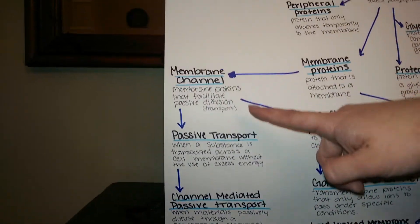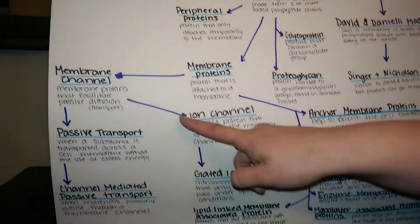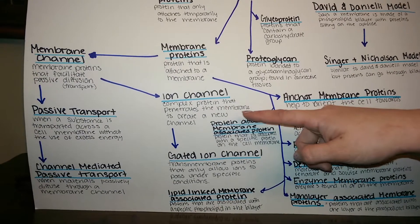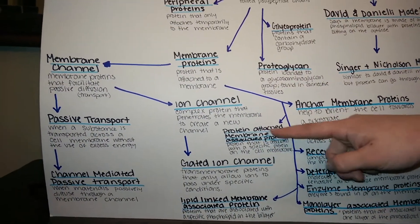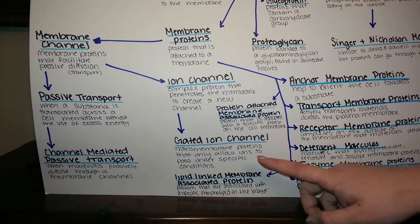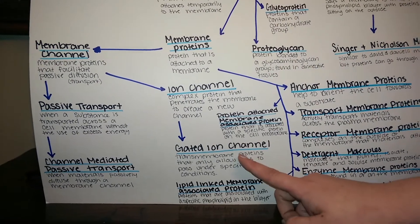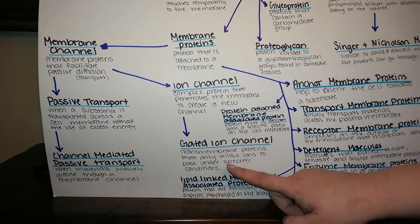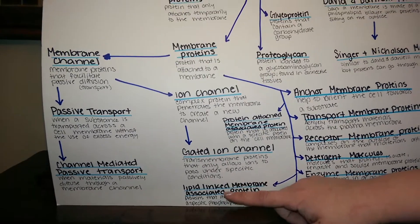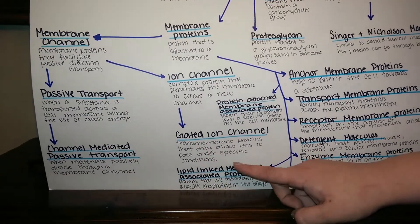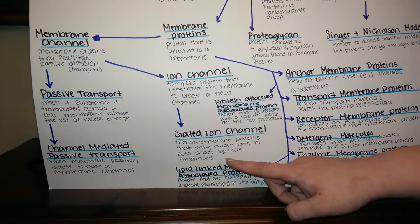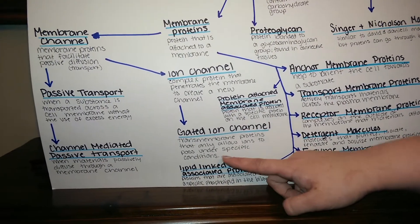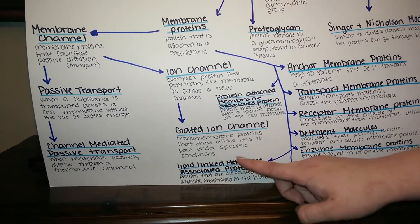Membrane channels also lead into ion channels, which are complex proteins that penetrate the membrane to create a new channel. This leads down to gated ion channels, which are transmembrane proteins that only allow ions to pass under specific conditions — so specific conditions have to be met to allow ions to come through that membrane.